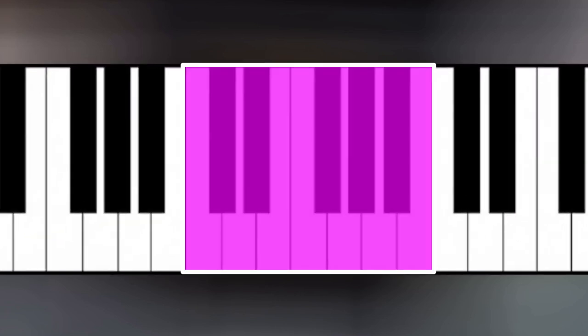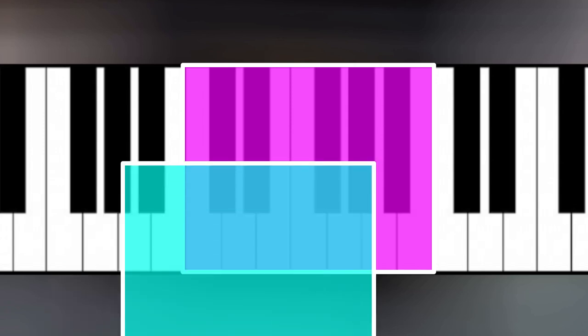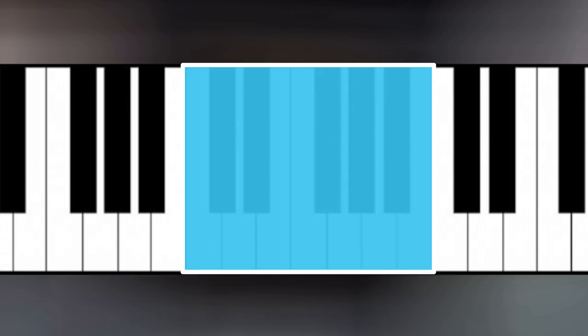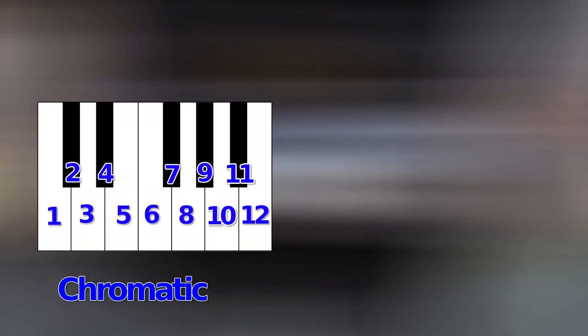In the chromatic scale, a physical semitone step and a step of the scale are identical because all 12 available keys in the scale occur as a step. Practically speaking, in the chromatic scale, all keys are numbered from 1 to 12.